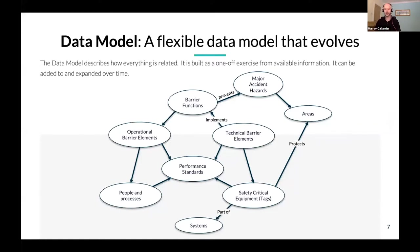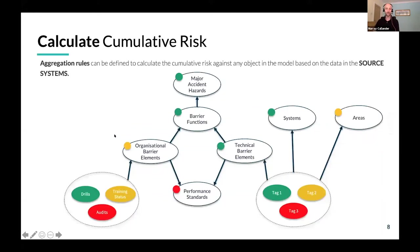The data model describes how everything is related. You build it as a one-off exercise and then maintain it, starting from available information and adding to it over time. One of the beauties of this kind of data model is that you don't have to get it 100% right first time — you build it with what you know, and as more becomes available you expand it.